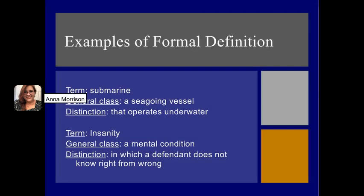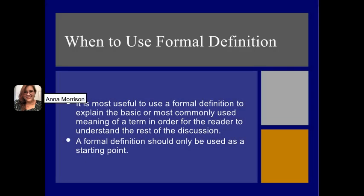Here are some examples of formal definitions. The first term is submarine. Submarine's general class is a seagoing vessel, and its distinction from other members of that class is that it operates underwater. A second term is insanity. Its general class is a mental condition, and the distinction is that insanity is a term in which a defendant does not know right from wrong. It is most useful to use a formal definition to explain the basic or most commonly used meaning of a term, and a formal definition should only be used as a starting point.